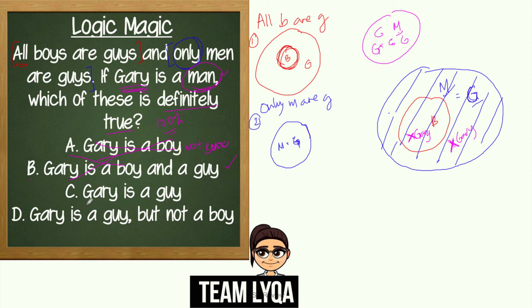Let's go to Letter C: 'Gary is a guy.' Looking at the diagram — wherever Gary is placed, whether here or here, Gary is still a guy because he is inside the bigger circle. So this is definitely correct.